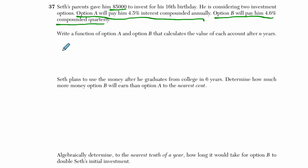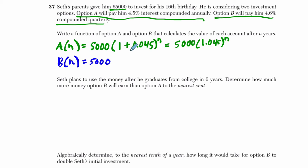Write a function for option A and option B that calculates the value of each account after N years. A of N for account A based on N years is going to start off at $5,000. The first one is going to be 1 plus 4.5% is 0.045, compounded once per year. So I'm going to condense this to 5,000 times 1.045 to the N. You're adding 4.5% once a year for N years.